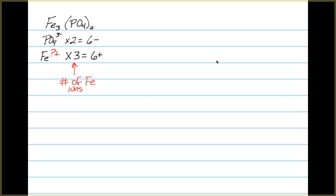The iron, we don't know what its oxidation state is, but we do know that there are three of them and the total must balance that negative 6. So the total must be a 6 plus from the iron.